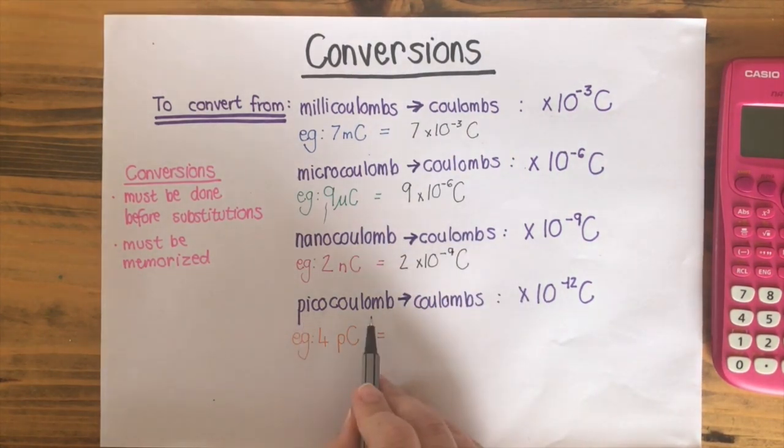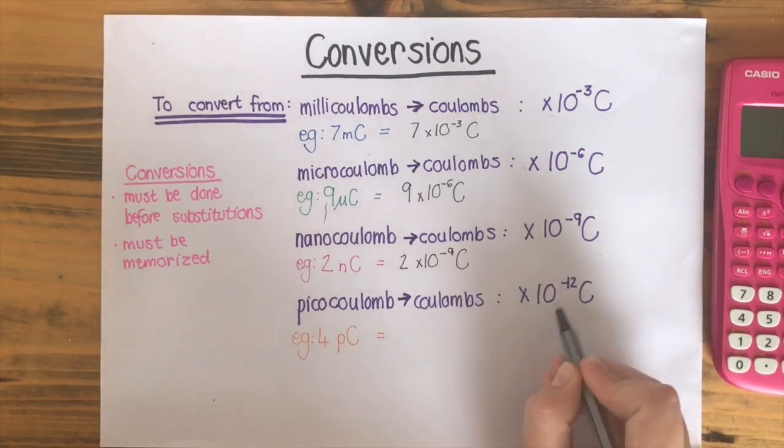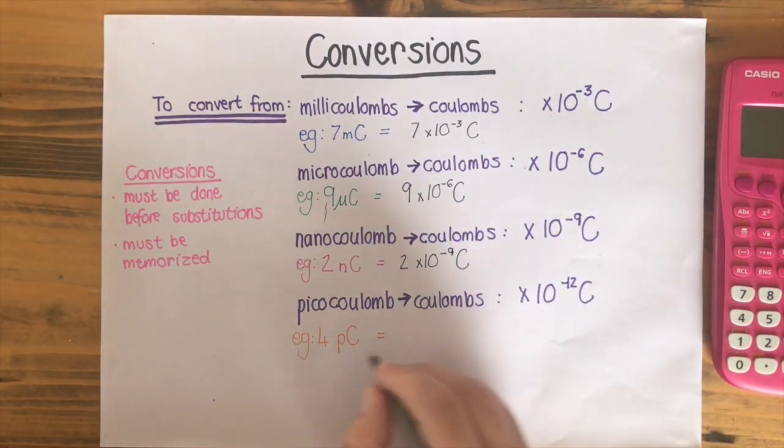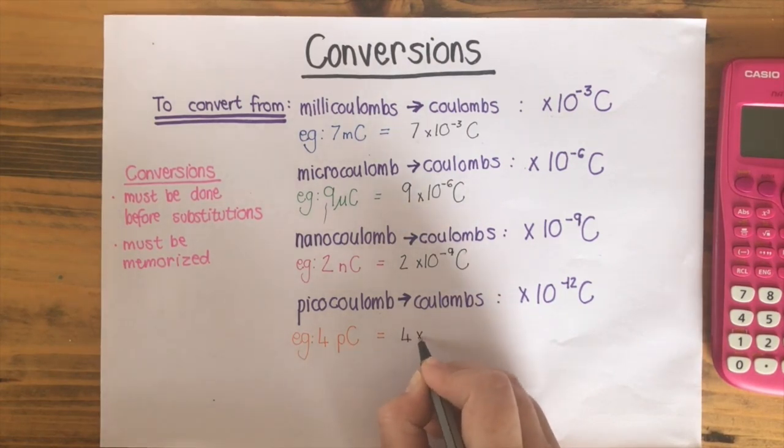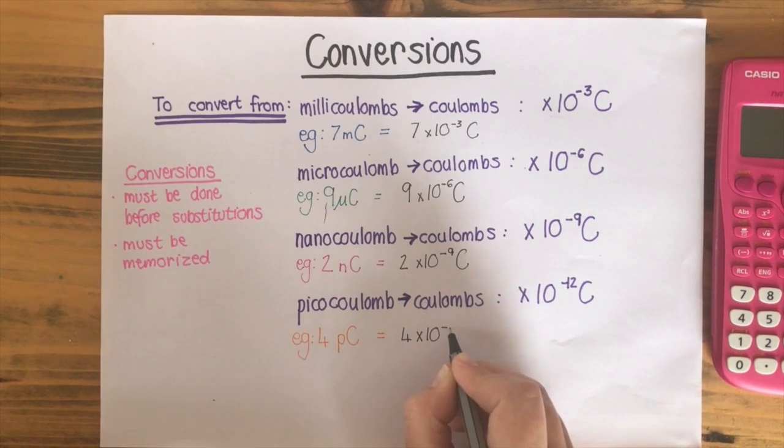For picocoulombs, we substitute in that times 10 to the power of minus 12. So 4 picocoulombs is the same as 4 times 10 to the power of minus 12 coulombs.